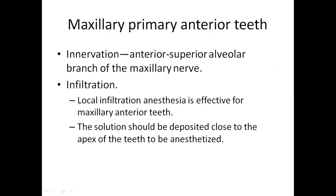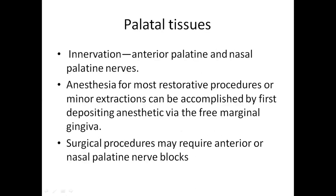A PSA block is used for the maxillary first permanent molar with local infiltration applied to the mesiobuccal root. For maxillary primary anterior teeth, the innervation is the anterior superior alveolar branch. Here, local infiltration is effective. Generally, the solution should be deposited close to the apex of the teeth to be anesthetized. Palatal tissues are innervated by the anterior palatine and the nasopalatine nerves. Anesthesia for most restorative procedures can be completed by first depositing anesthesia at the free marginal gingival.